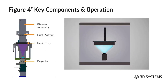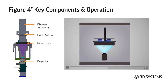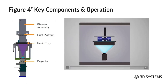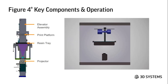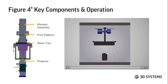These are the key components in operation. From the video you can see the imager or projector, the resin tray filled with material, and the light coming from underneath the resin tray. The z-elevator assembly moves up one layer at a time as you build your part, which is built on the print platform shown to the right.